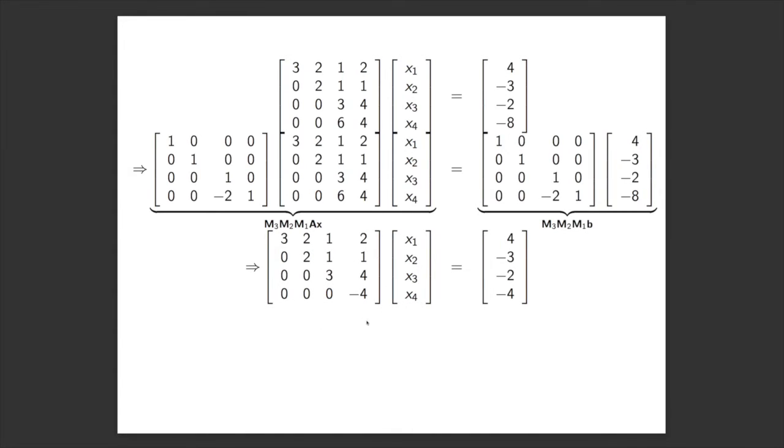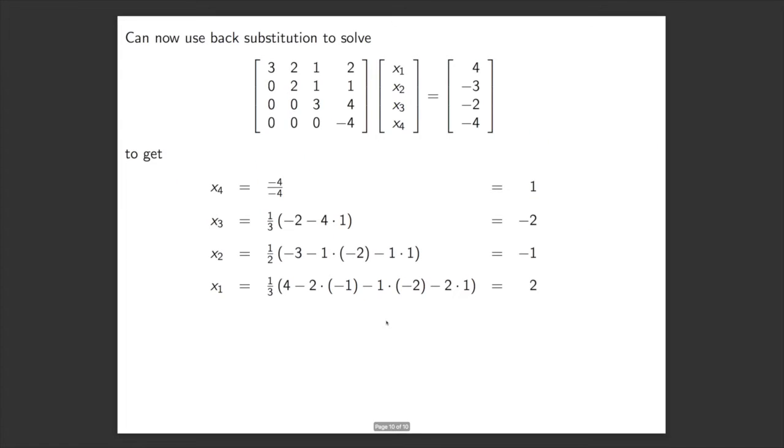we've got our matrix in our upper triangular form, our system of equations, where the matrix is in upper triangular form. And we know we can rapidly solve that using back substitution. So we start by solving this one where we've only got one unknown. So x4 is 1, and we back substitute that to get all the way to x1.